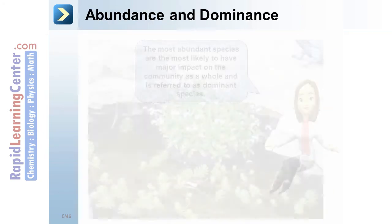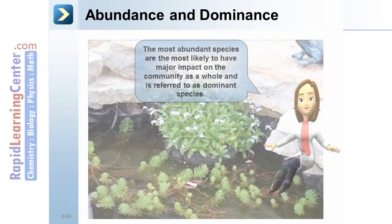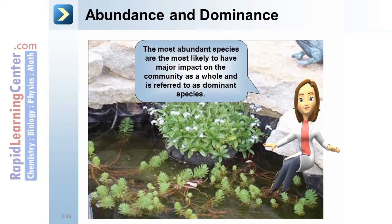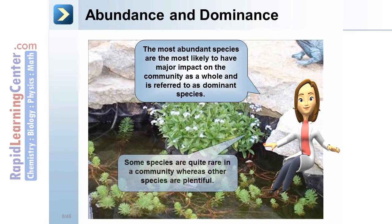The most abundant species are the most likely to have the major impact on the community as a whole and are referred to as the dominant species. Some species are quite rare in a community whereas other species are plentiful.